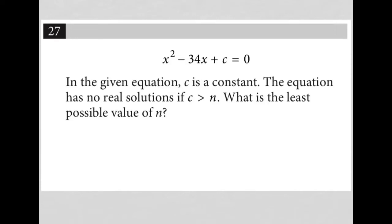This question starts off with this equation here: x² - 34x + c = 0. The question goes on to say, in the given equation, c is a constant. The equation has no real solutions if c is greater than n. What is the least possible value of n?